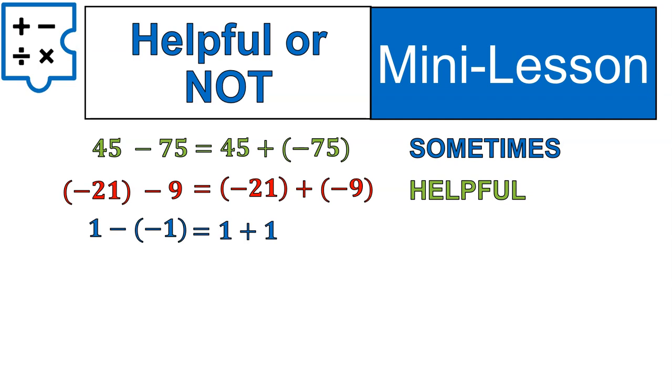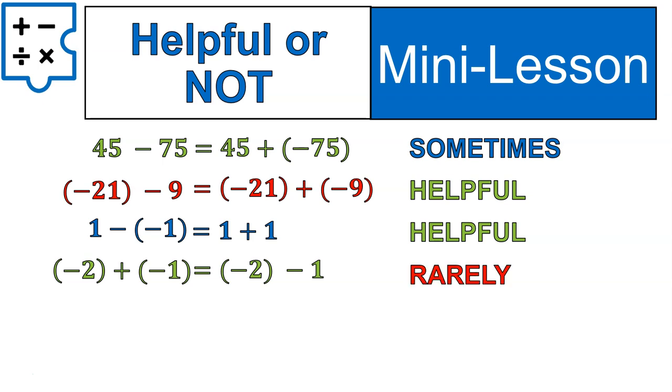In this expression 1 minus negative 1 and we rewrite it as 1 plus 1 I'm going to say that's helpful again. That to me is the most common always change it type of expression. We also have this one here where we change it from negative 2 plus negative 1 is equal to negative 2 minus 1. That one I'm going to say you would rarely find it more helpful to write it out the second way. I would just add those two negatives boom a negative plus a negative just add them together. I find that a lot more helpful.